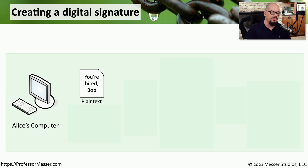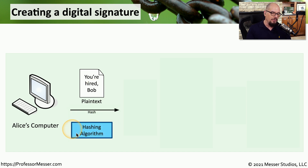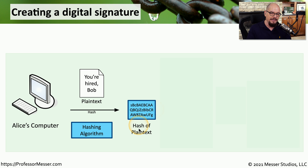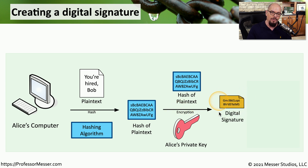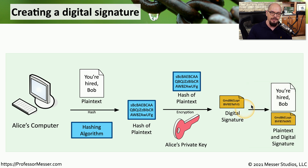Let's look at how a digital signature is created. Alice is hiring Bob and wants to send a message saying 'You're hired, Bob,' making sure Bob can verify it's legitimate and really came from Alice. Alice performs a hashing algorithm on the entire plain text message, producing a hash of the plain text. To prevent modification in transit, Alice then encrypts that hash with her private key — and only Alice has her private key. The result of that encryption is what we call a digital signature, which is then attached to the original plain text and the entire message is sent to the recipient.